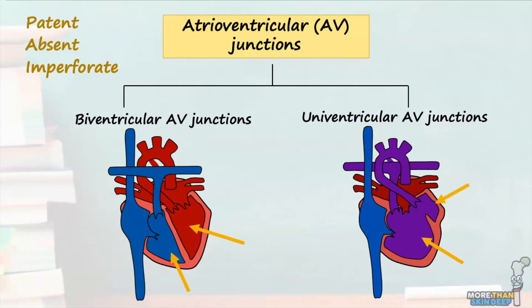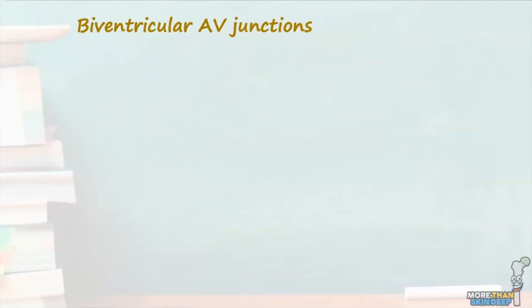In these patients, almost the entirety of the body's blood supply is supplied by a single ventricle to produce a univentricular circulation. Let's apply our knowledge on the patterns of atrial arrangement to take a closer look at the different types of biventricular AV connections.